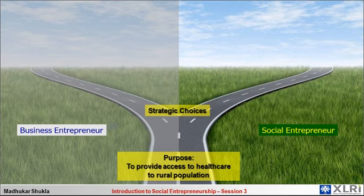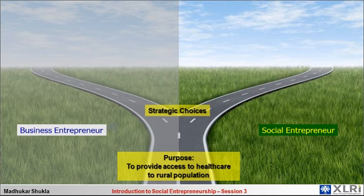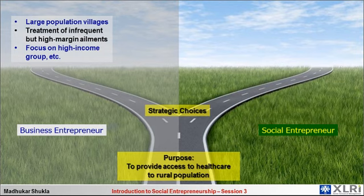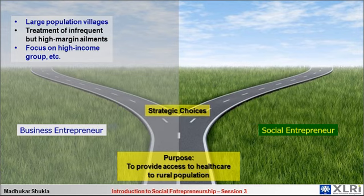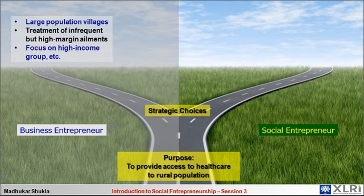Since the business entrepreneur is looking at maximizing personal or financial wealth for the enterprise, entrepreneur, shareholders, and investors, they are more likely to target segments that give more financial returns — for example, villages with large dense populations where it is easier and less costly to deliver healthcare, focusing on diseases which may be infrequent but have high margins, and focusing on high income groups because that is where returns would be high.